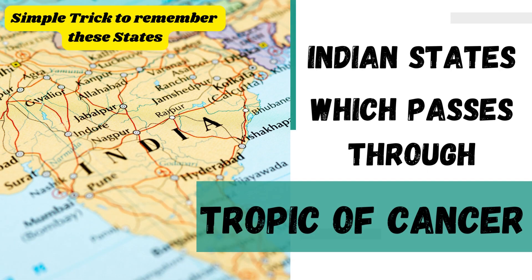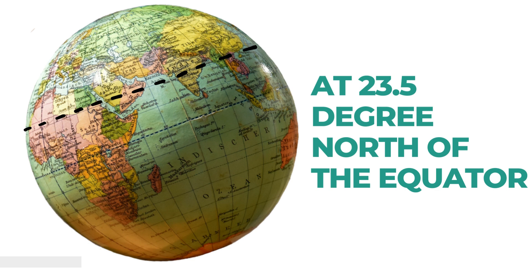Hi friends, welcome to Top Range GK. Do you know which states the Tropic of Cancer passes through in India? This video will help you learn those state names and one simple trick to remember them for your exam. The Tropic of Cancer is an imaginary line at an angle of 23.5 degrees north of the equator, which passes through the middle of India. It passes through 17 countries, and India is one of them.